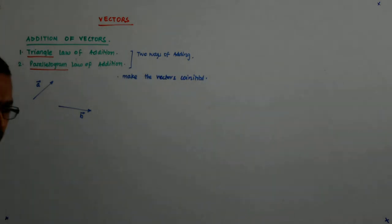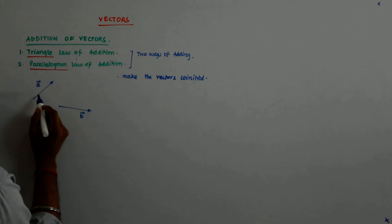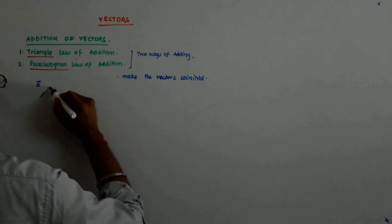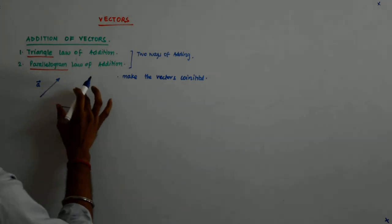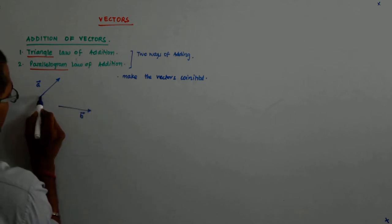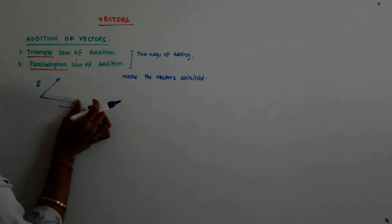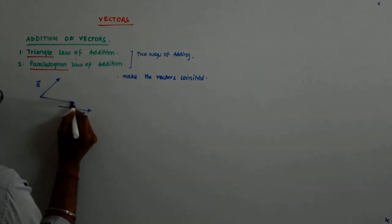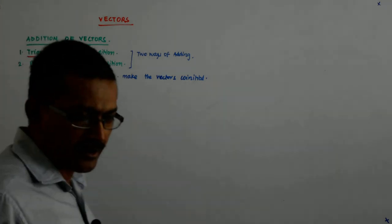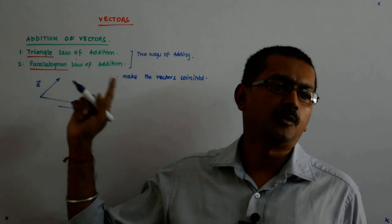How do you make them co-initial? By moving them parallel to themselves. So I will shift this vector — let this be A. I am shifting B, so it becomes something like that. After making them co-initial, with these two as the sides, form a parallelogram.